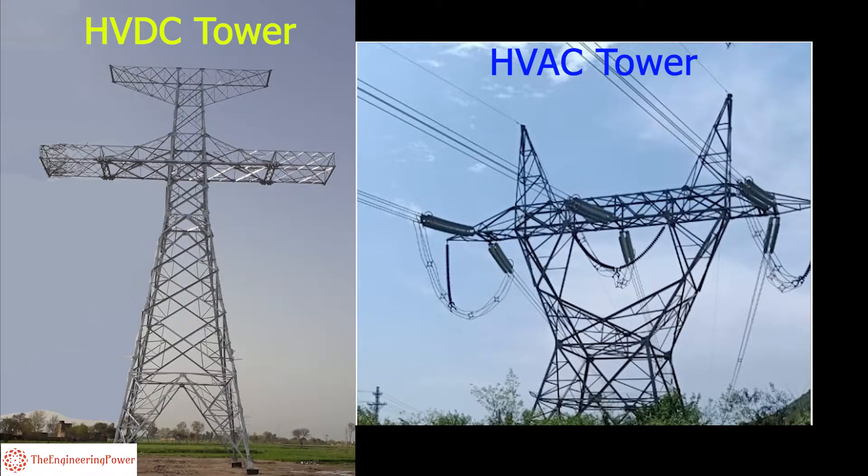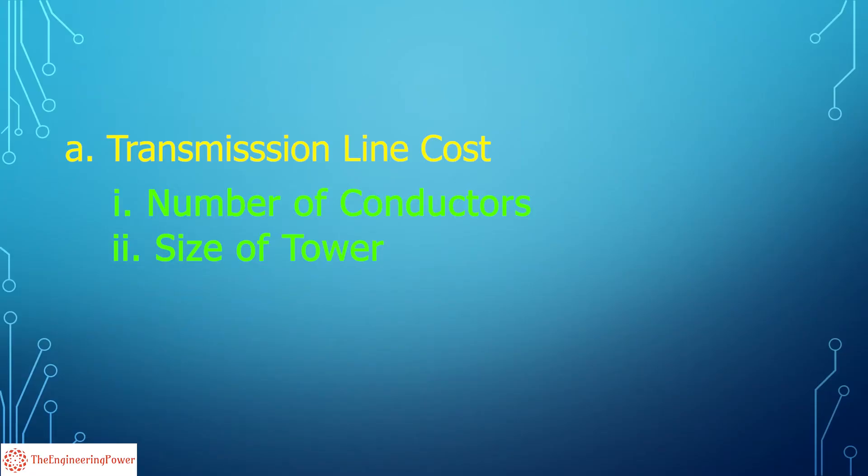DC transmission requires two conductors per circuit whereas AC transmission requires three conductors per three-phase circuit. Also the supporting towers used in HVDC system are smaller and require less right of way as compared to HVAC towers. So based on the number of conductors and size of towers, HVDC transmission line will cost less than an HVAC transmission line.